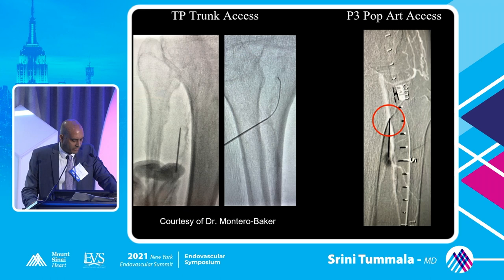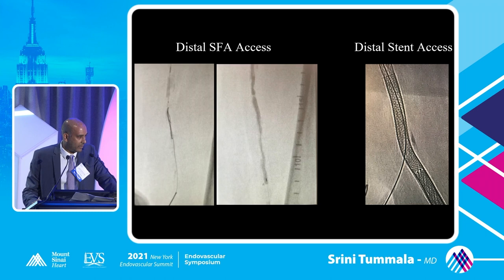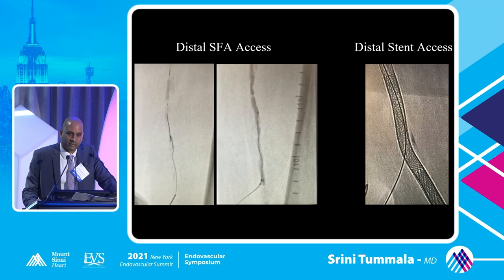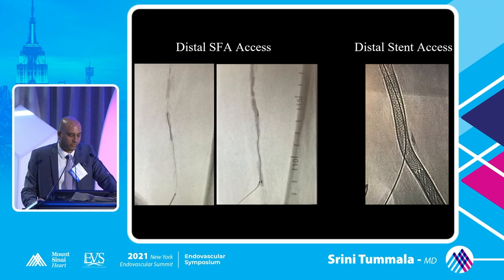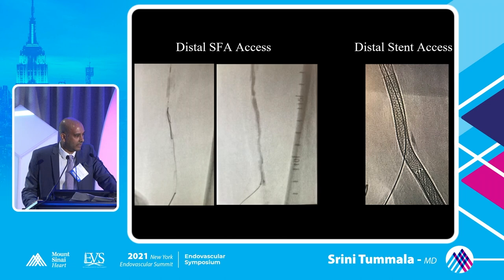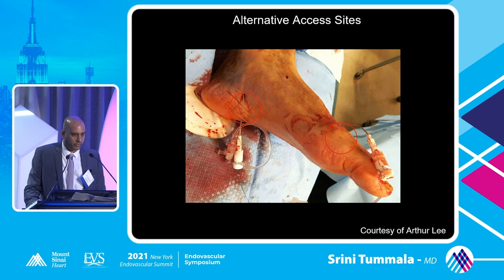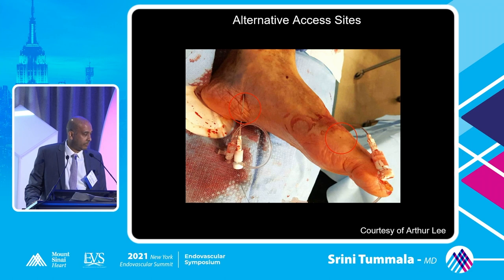There's also distal SFA access for FEMPOP CTO — a nice, safe access using a catheter and various guide wires. Rarely do I put sheaths in, and in hundreds of cases there have been very few hematomas or tissue disruption. If you have an occluded stent and can't get through the proximal cap from above, don't forget a modified Schmidt procedure — accessing the stent directly to achieve through-and-through access. There are also alternative access sites like lateral plantar artery and digital artery access, typically reserved for limb salvage cases.